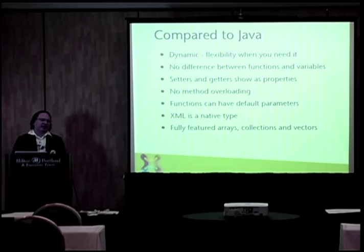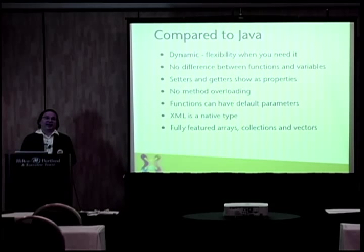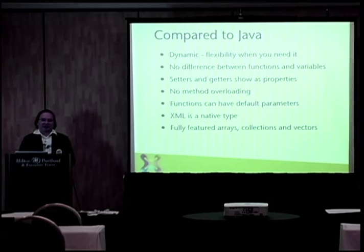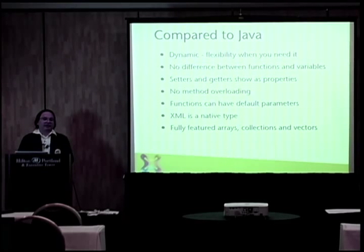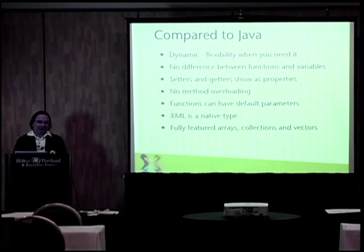Compared to Java, it's actually a dynamic language. You can create basic objects, add methods at runtime, add properties at runtime, and even change methods around at runtime. There's absolutely no difference between functions and variables — functions are first-class citizens, you can pass them around as parameters to methods. Setters and getters actually work and show up as properties, so there's no reason to write lots of getter/setter code that just does a single thing. It makes your code much easier to read. There is no method overloading, but functions can have default parameters.